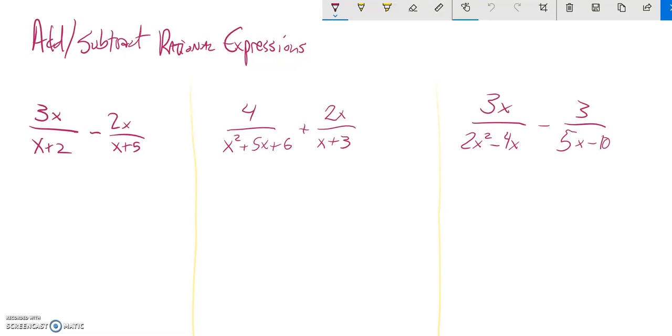Notice that's different with multiplication. With multiplication, we can just multiply straight across, factor everything and cancel. But in this case, we're going to find a common denominator.